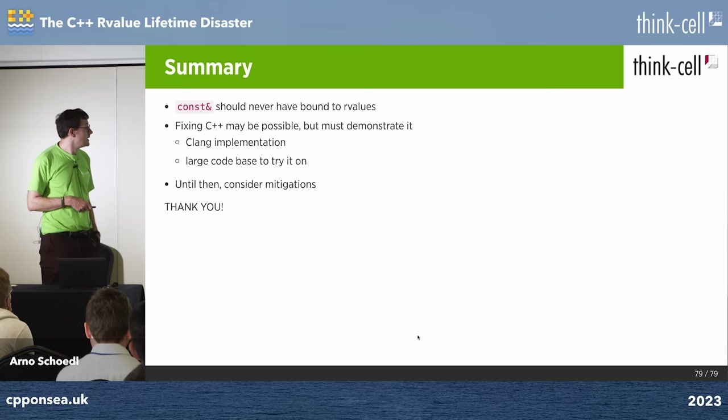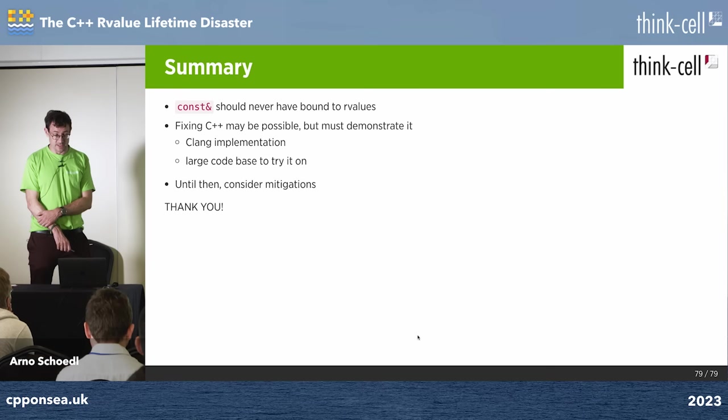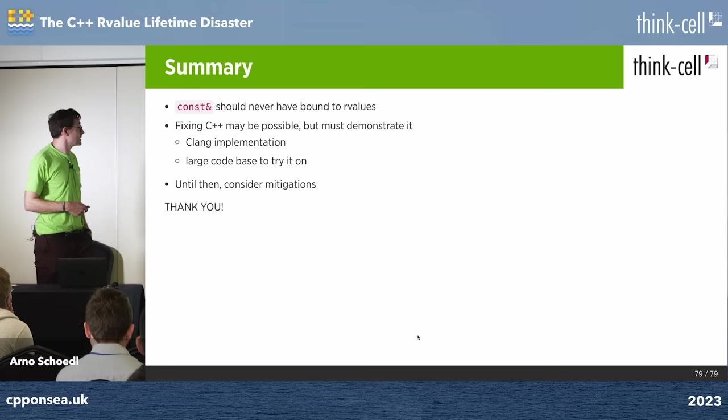In summary: const reference probably should never have bound to R-values — that was an accident. We can propose a fix for C++, but we still need an implementation and a large codebase to validate it on. Until then, we have to live with the mitigations shown. Thank you very much — and we are hiring.